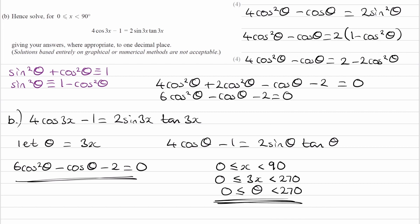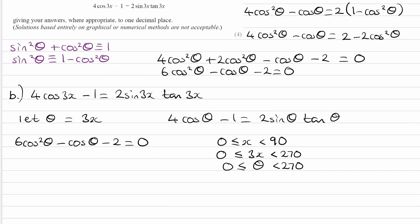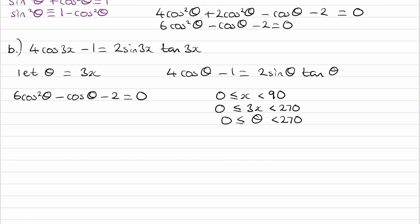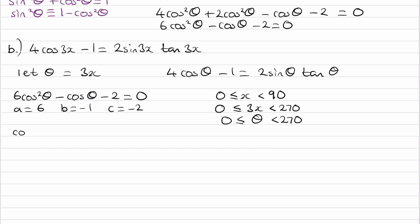Once we've done that, we can convert back to x. This is a quadratic, and if you were to type this into your calculator, a equals 6, b equals minus 1, c equals minus 2. Put this into your quadratic equation solver, and you end up with cos theta equals 2 over 3, and cos theta equals minus 1 half. Those are the two solutions for our quadratic.